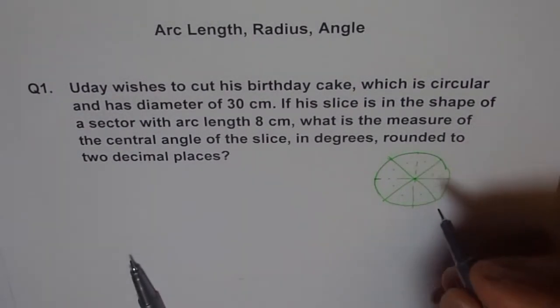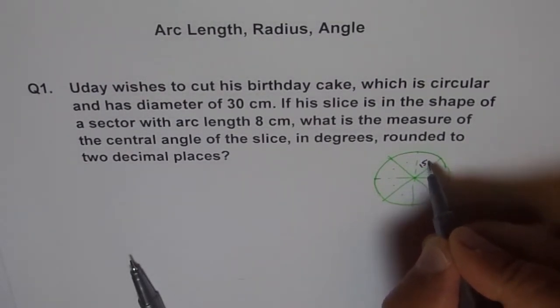Therefore the radius should be how much? Radius will be half of 30. So we will say radius is 15 cm. From here to here it is 15 cm.